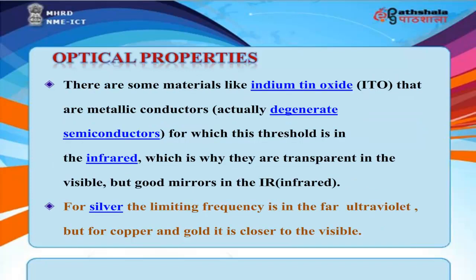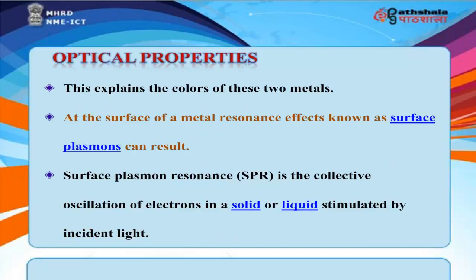Some materials like indium tin oxide (ITO) are metallic conductors — actually degenerate semiconductors — for which the plasmon threshold is in the infrared, making them transparent in the visible but good mirrors in the infrared. For silver, the limiting frequency is in the far ultraviolet, but for copper and gold it is closer to the visible, which explains the colours of these two metals.